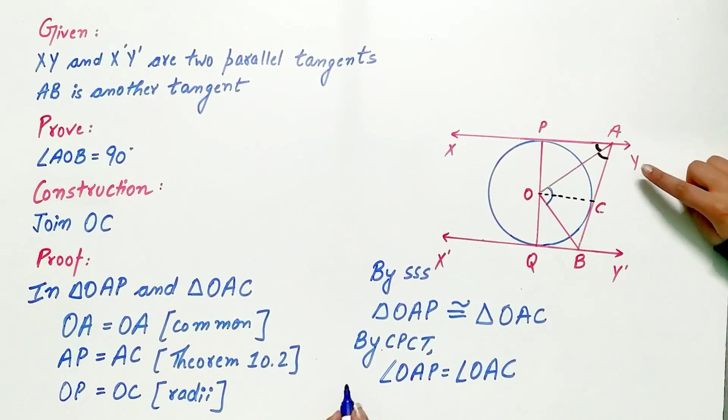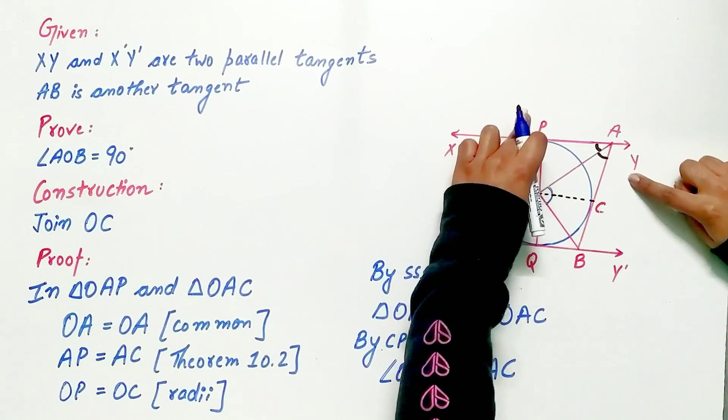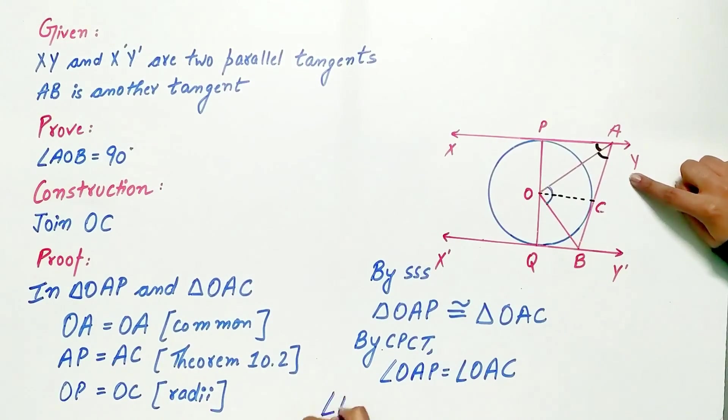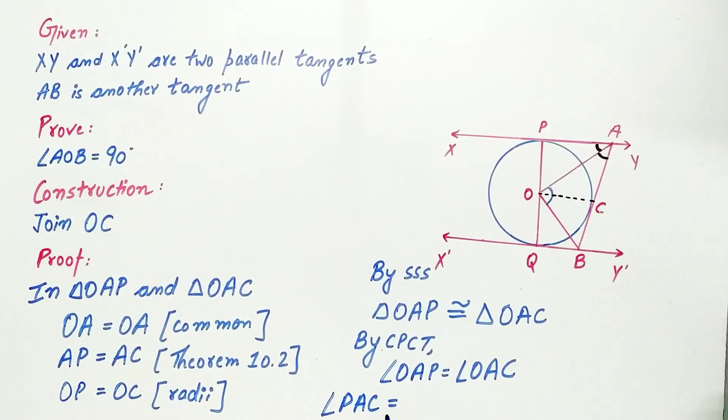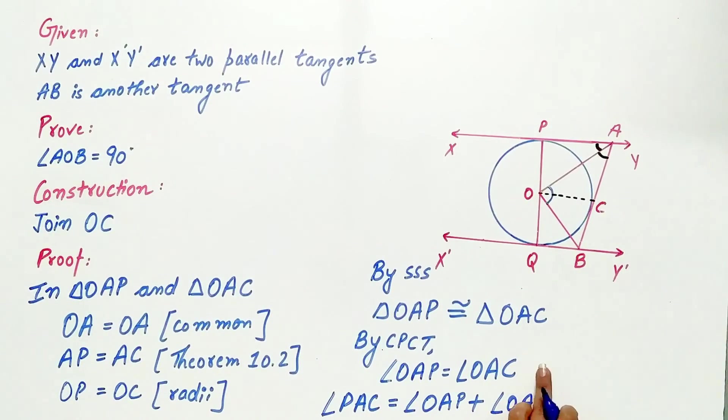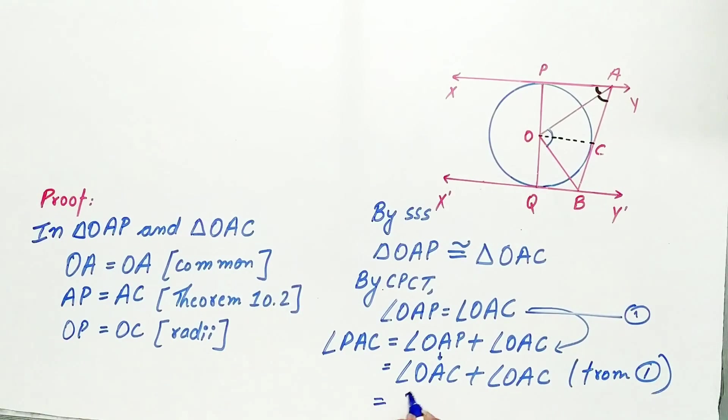Now this is a bit lengthy question. So have patience. Now see, angle PAC is made up of angle PAO or angle OAP plus angle OAC. OAP is equal to angle OAC. So substitute angle OAC in place of OAP. It is equal to twice of angle OAC.